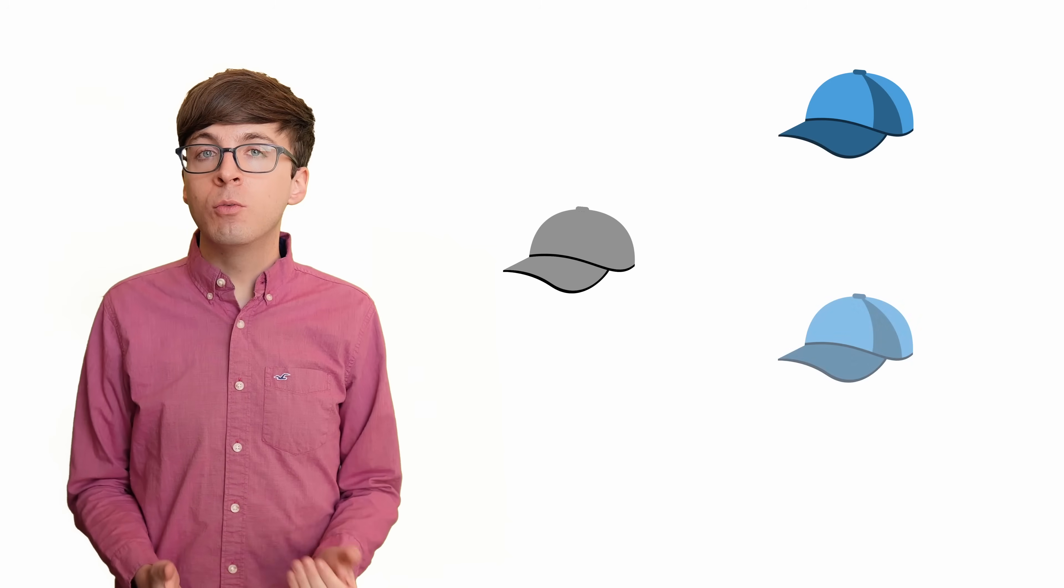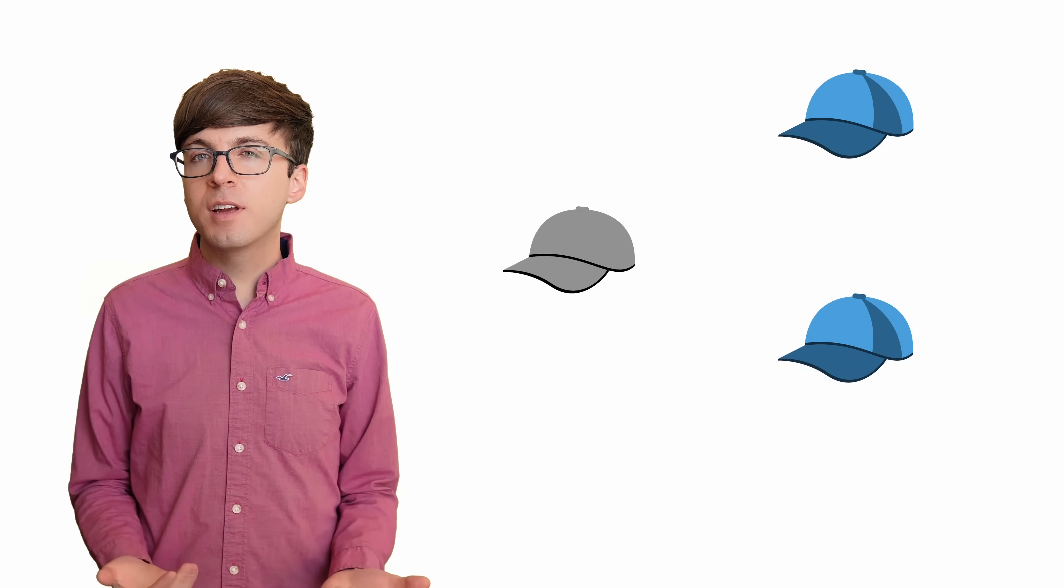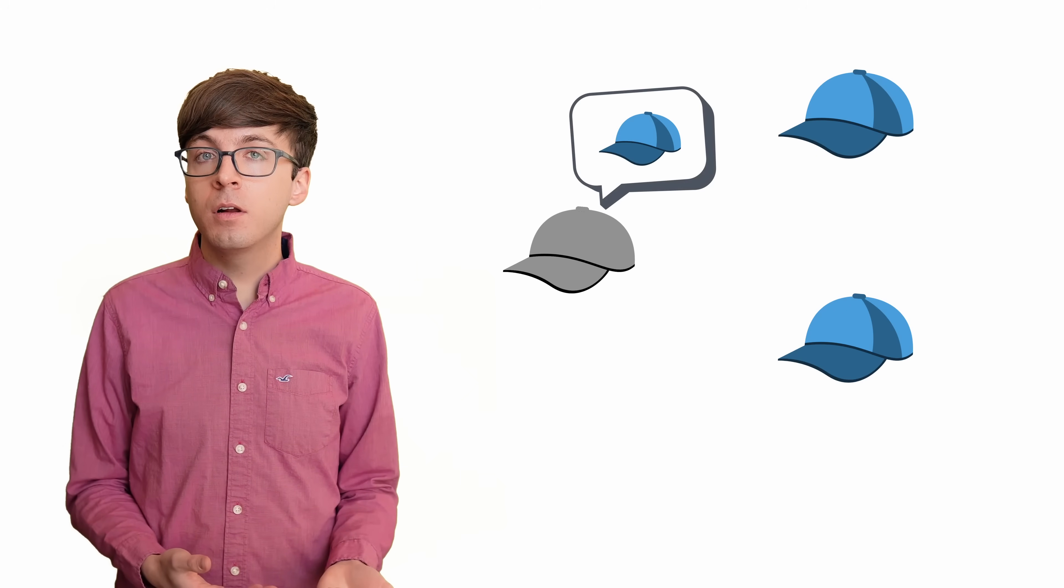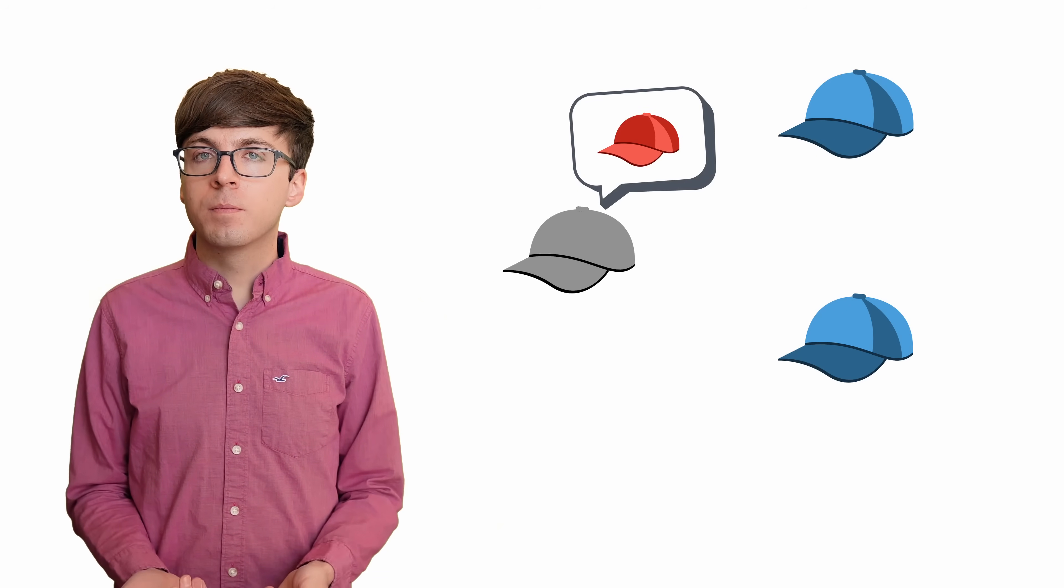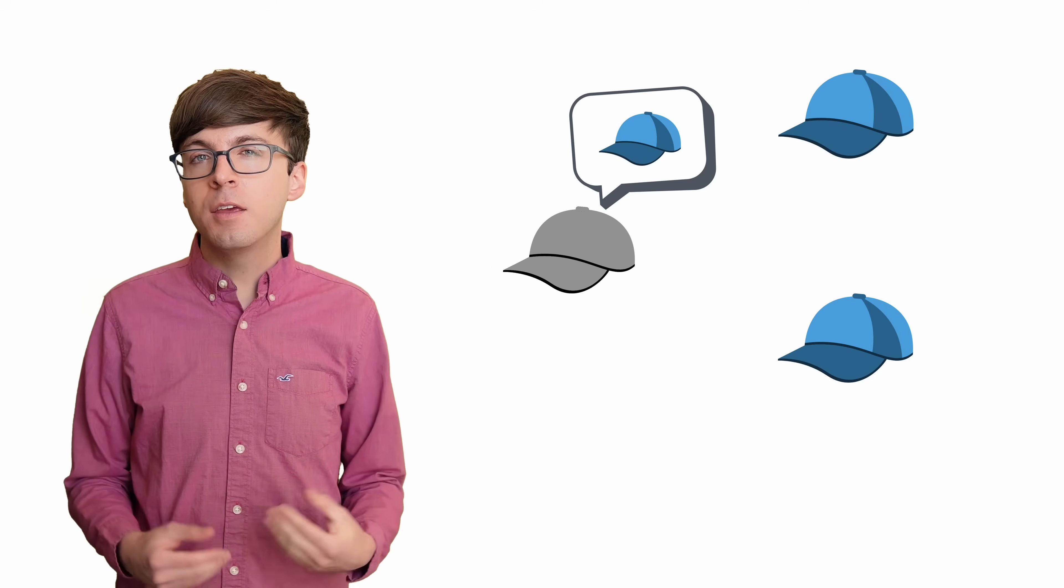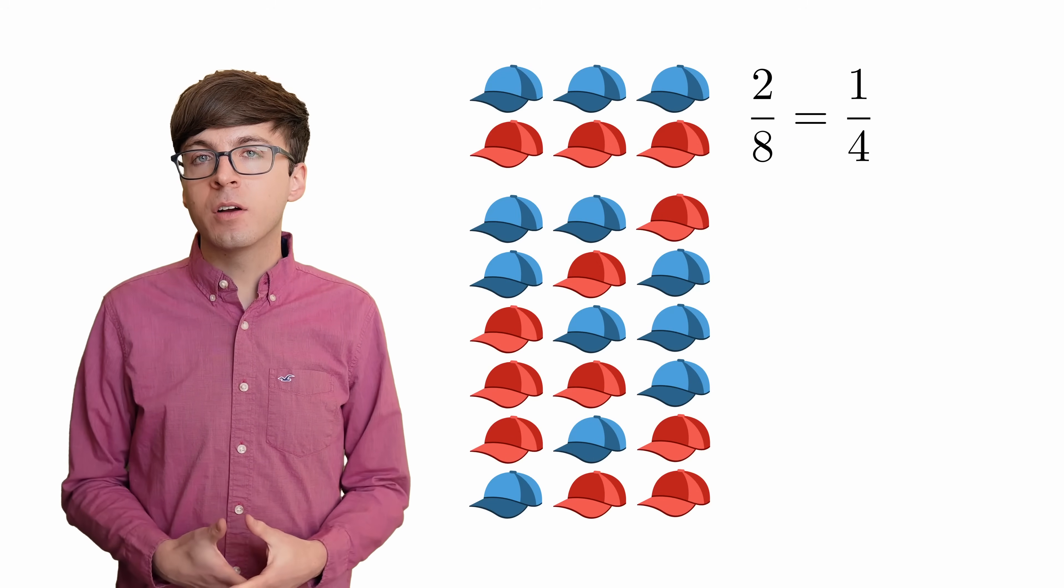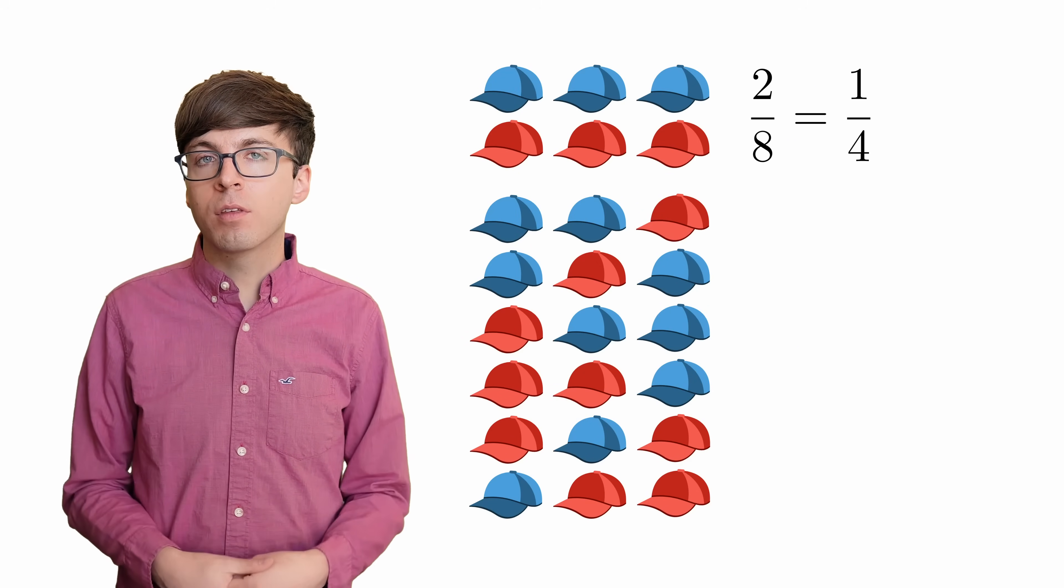But what if a prisoner sees two identical colors, both blue or both red? Should the prisoner guess that they also have that same color, or that they have the other color? To have the same color, that would mean all three of them have the same color, either all blue or all red. That happens in two out of the eight possible cases, or one-fourth of the time.